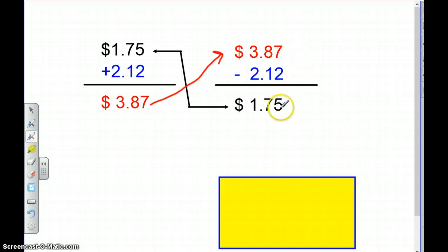So 7 minus 2 is 5, 8 minus 1 is 7, 3 minus 2 is 1. So we can say check, check, check. We have all the same 3 numbers, so that means that our answer is correct.